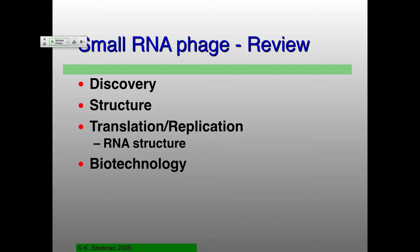Before we talk about that, I did want to briefly review small RNA phage. Where did we find them — the small RNA phage? The best place to find bacteriophage is sewage treatment plants, or at least wastewater. The structures of them — first people thought they had these nice icosahedral symmetric structures. But why were they not completely icosahedral?